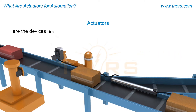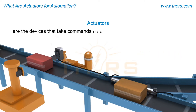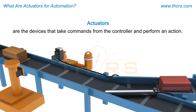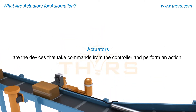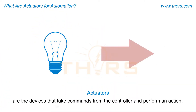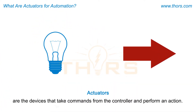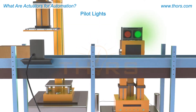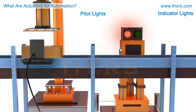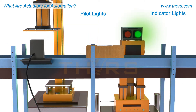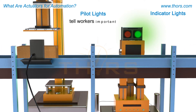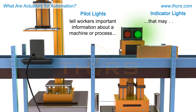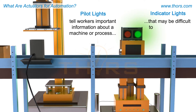Actuators are the devices that take commands from the controller and perform an action. Some actions are simple, such as on-off or forward-reverse. Pilot lights, also known as indicator lights, are actuators that tell workers important information about a machine or process that may be difficult to see otherwise.